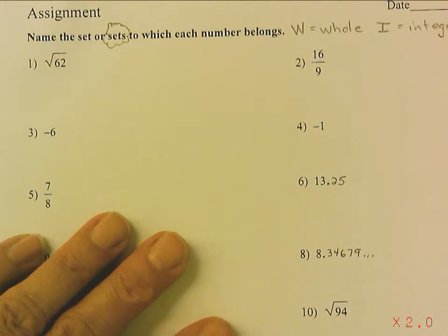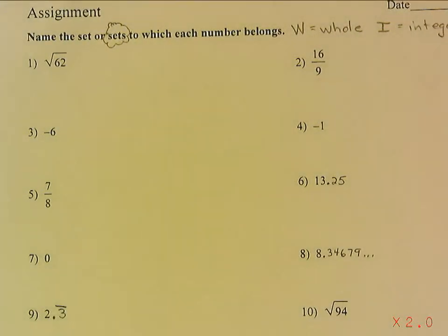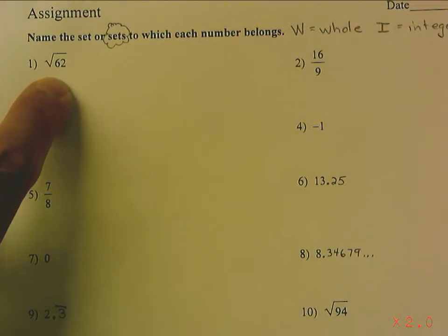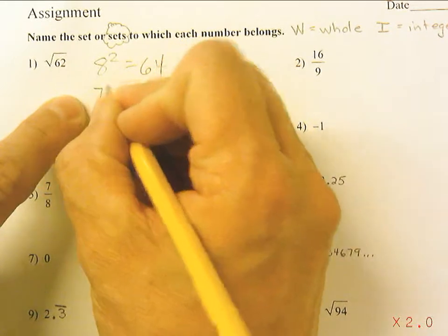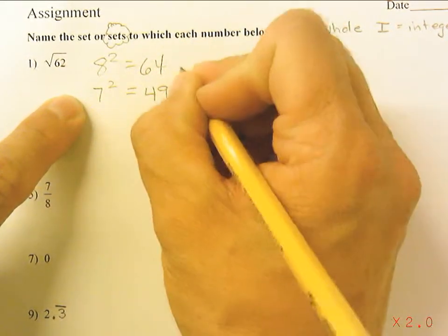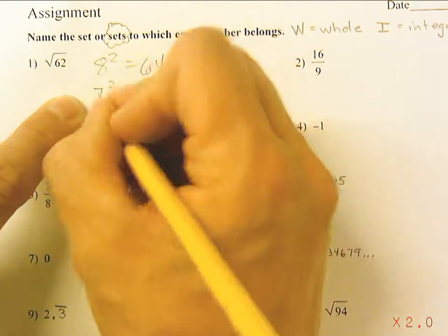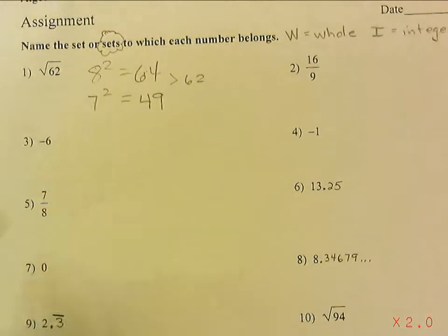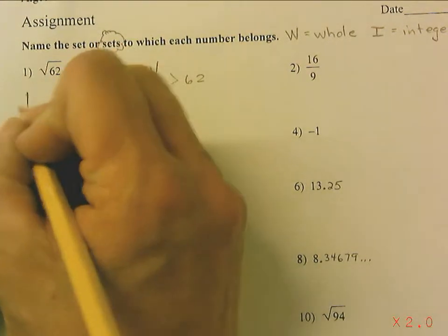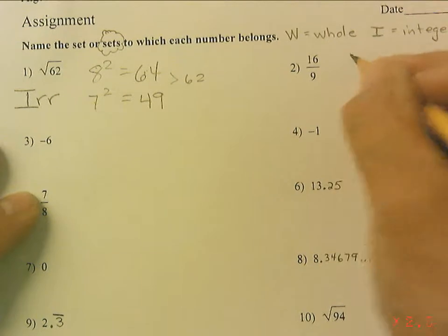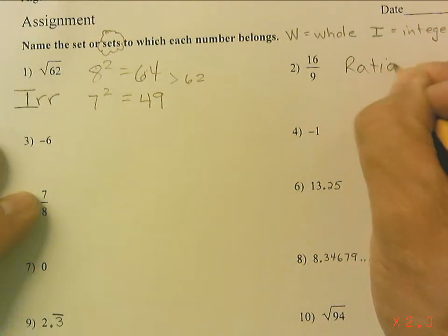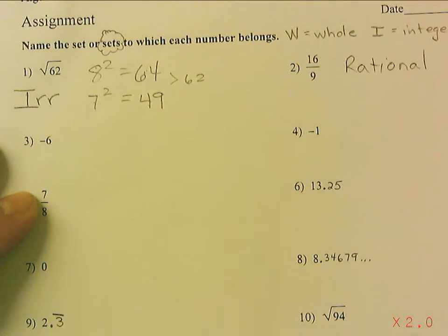The first problem is the square root of 62. The square root of 62 is not a perfect square — I know that because 8 squared equals 64 and 7 squared equals 49, so 62 is in between two perfect squares. Therefore it's the square root of a non-perfect square, which is automatically irrational. Number 2, 16 ninths, is obviously rational since it's already written as a fraction.